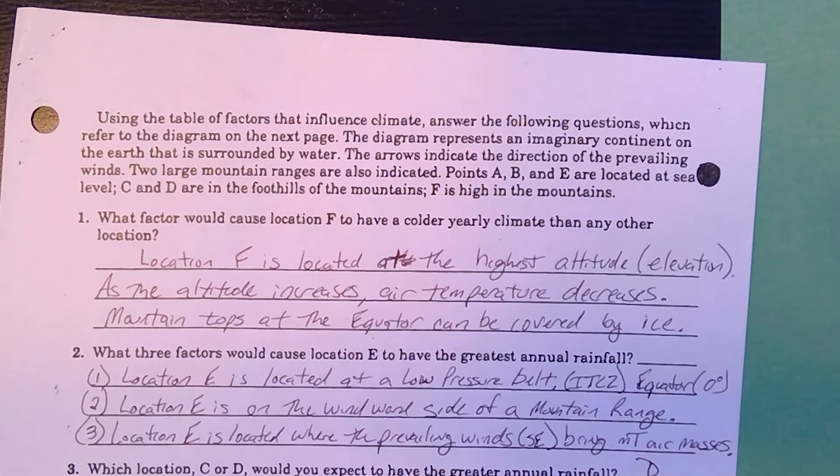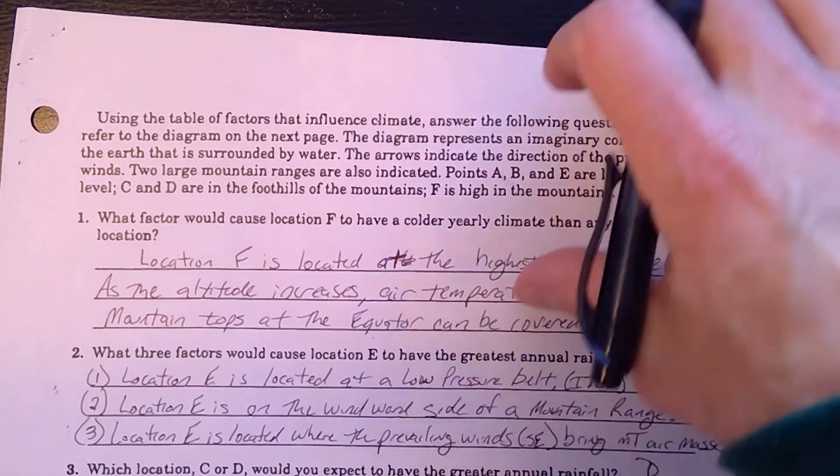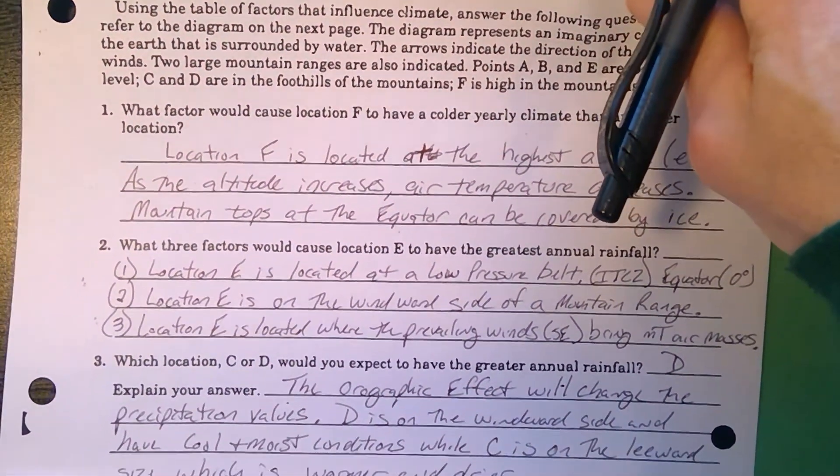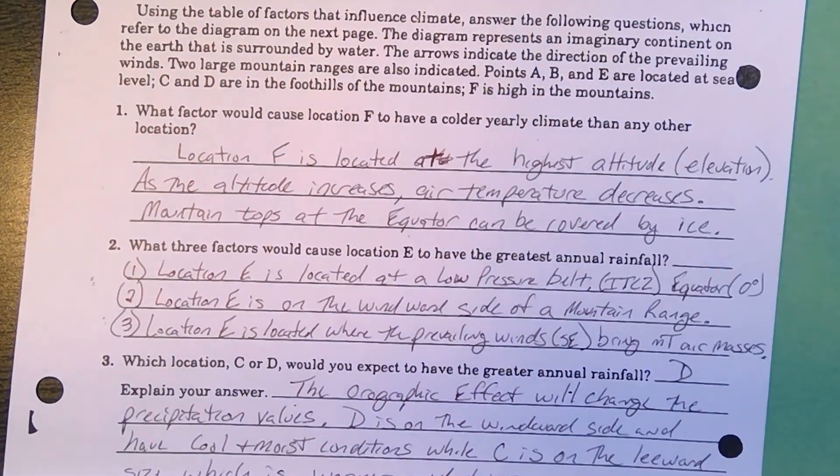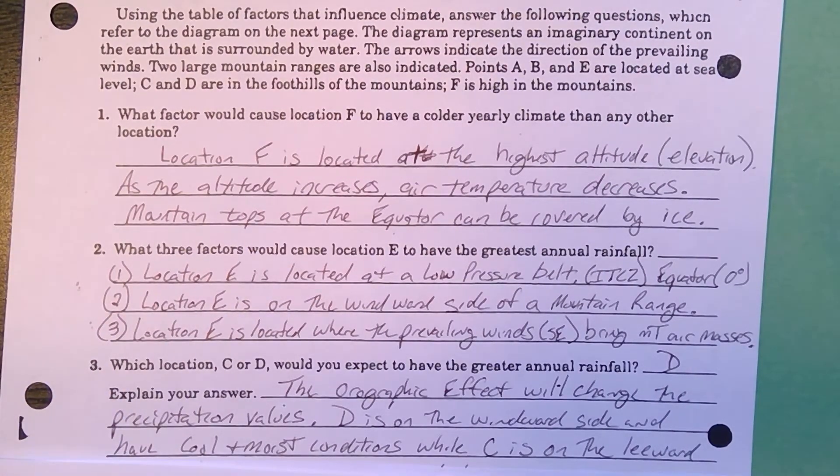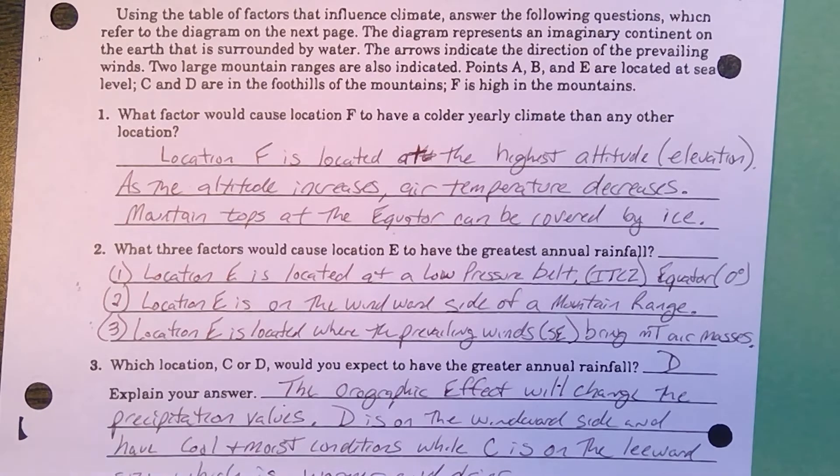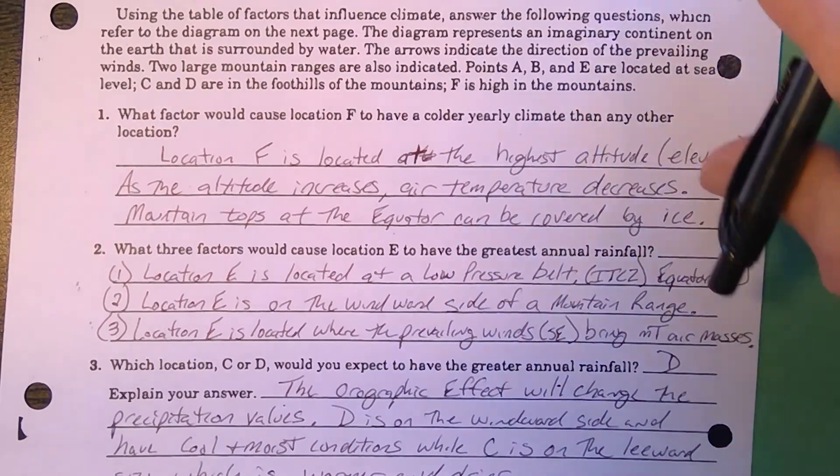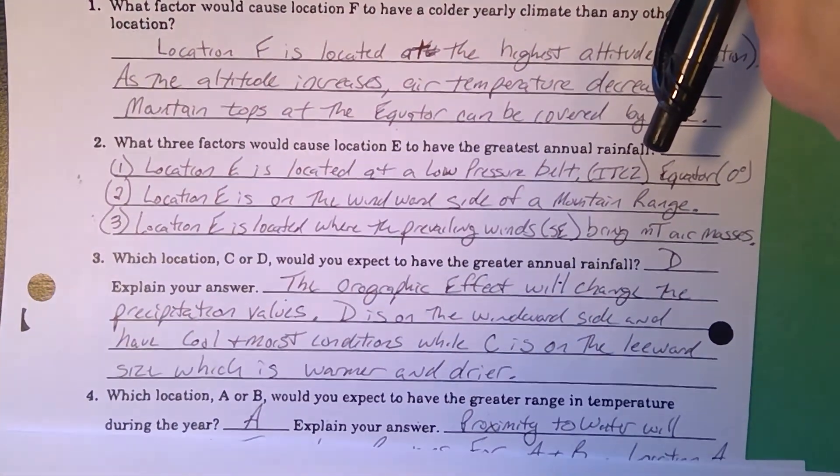For question three, I wrote something like this. Yours does not have to be this extensive, but this goes through everything. Windward and leeward, they call that the orographic effect. When you're looking at three, the orographic effect will change the precipitation values. Windward side is cool and moist, while C is on the leeward. The leeward side is hot and dry. Another phrase or another term they might use there is arid.